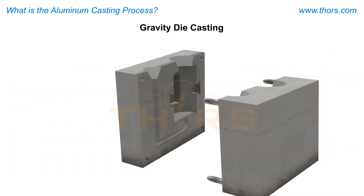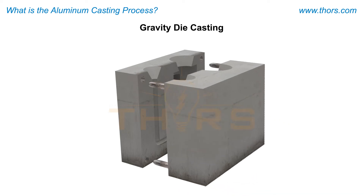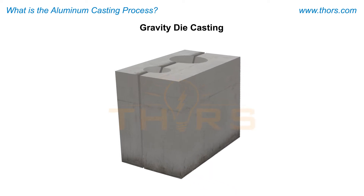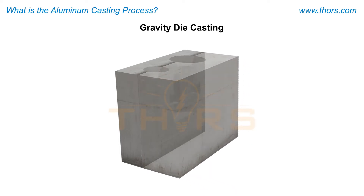A common application for permanent molds is gravity die casting, in which two die halves — one fixed and one moving — are clamped tightly together to produce a vertically oriented casting.